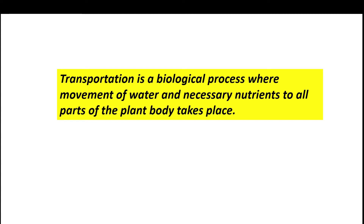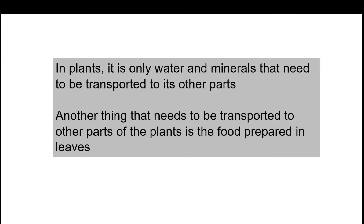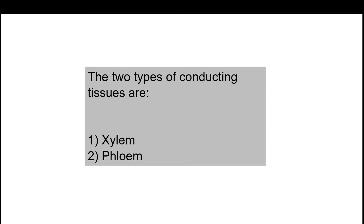Transportation is a biological process where the movement of water and necessary nutrients to all parts of the plant body takes place. In plants, two things need to be transported: first, water and minerals from the soil to other parts; and second, the food prepared in the leaves needs to be transported to other parts of the plant. So there are two aspects in plant transportation.